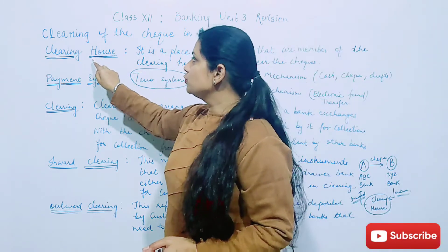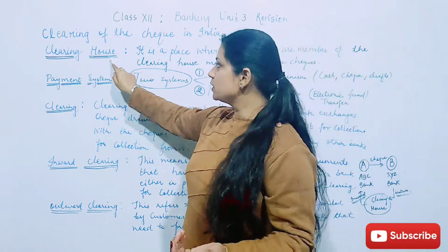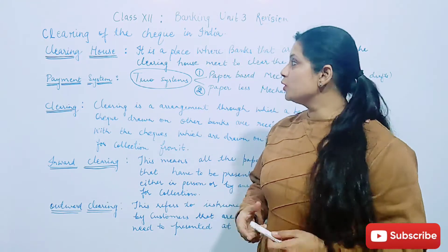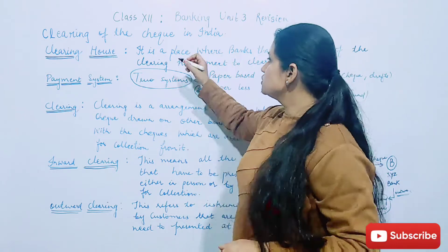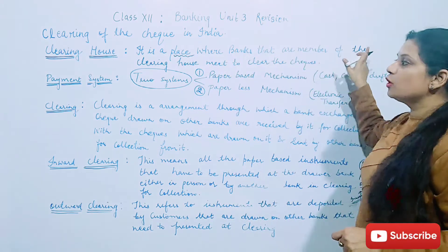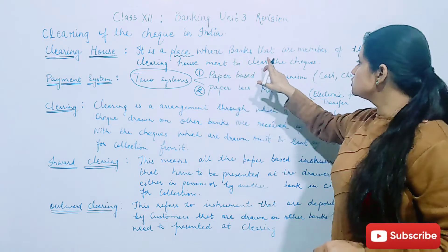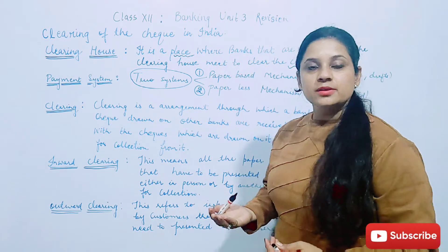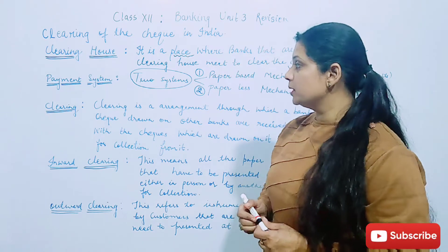Firstly, we have to understand ki clearing hota kahan pe hai. So clearing hota hai basically clearing house mein. Aur clearing house wo aisa place hai jahaan par where banks that are member of the clearing house meet to clear the checks. Jahaan pe banks apne checks present karte hai for clearing of the payment.